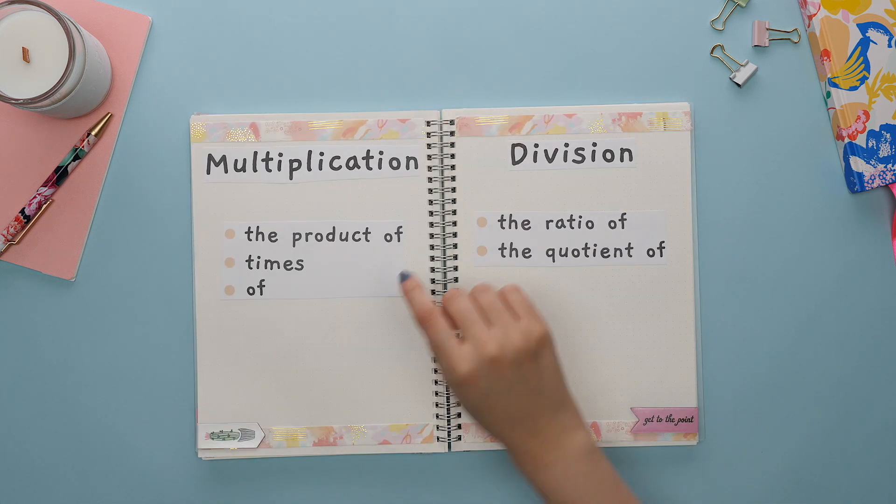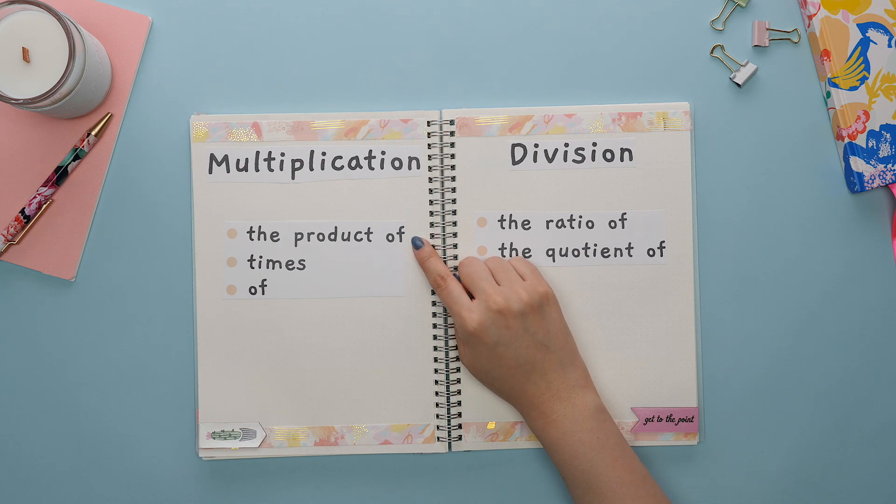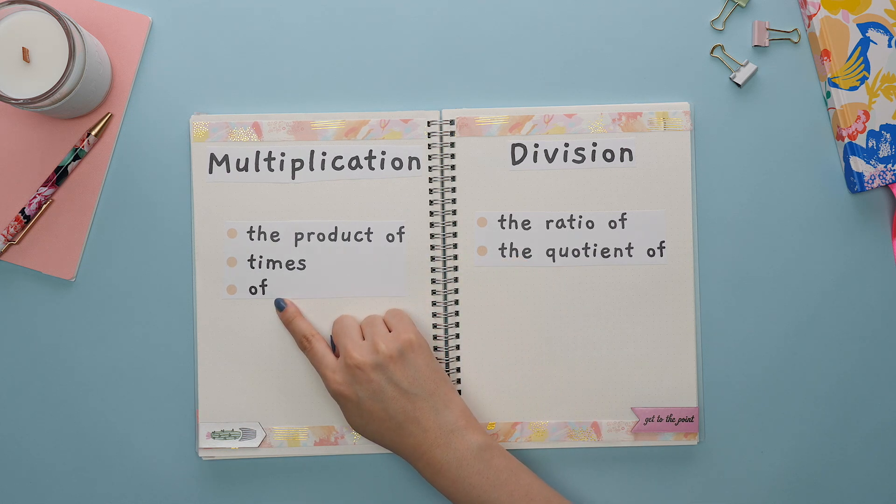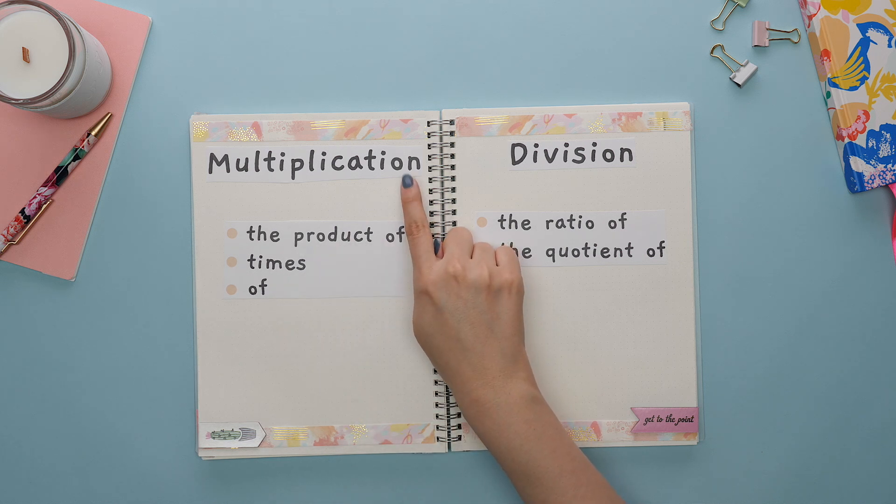Next is multiplication. The keywords and phrases here are the product of, times, you could even just see the word of, and that is your hint that this is referring to multiplication.